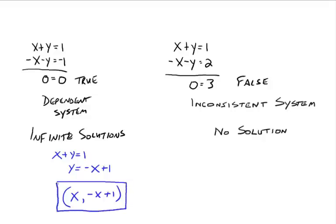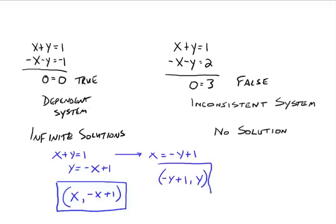We could just as easily isolate x instead of y. You would have x equals negative y plus 1, and now we've written x in terms of the variable y. We'd need to know the y value first. All the y values are whatever we choose, and all the x values are negative y plus 1. Either form gives you the same ordered pairs that are solutions to the original system.